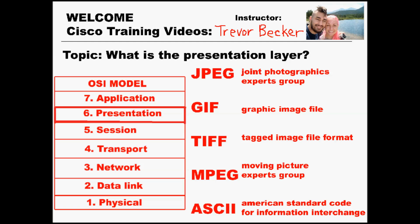Here are some of the more common layer 6 protocols — you may even find yourself familiar with some of these extensions. First we have JPEG, which is Joint Photographic Experts Group, a common extension used for pictures. Next is GIF, which stands for Graphic Image File — I'm sure you've seen these on the internet, these are usually funny moving images.